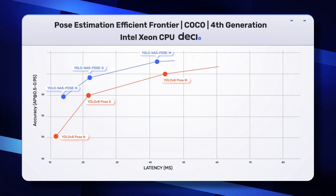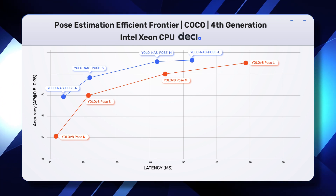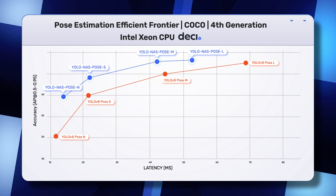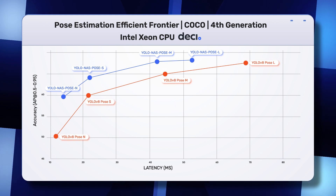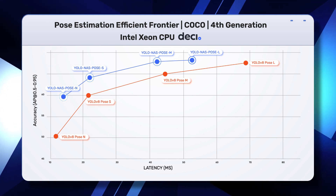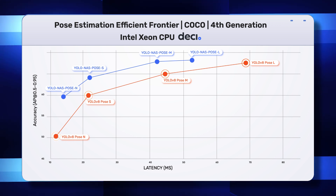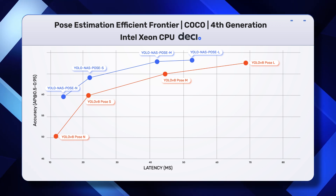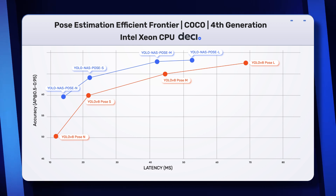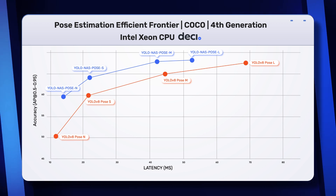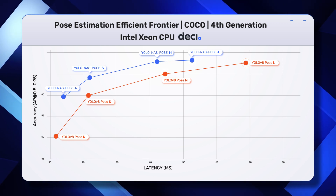Here is the Accuracy Latency Graph, also known as the Efficiency Frontier, which compares both YOLO NAS and YOLO V8 Pose Models. As you can see, the YOLO NAS models have higher accuracy than the YOLO V8 models. However, the smaller YOLO NAS models are not as fast as the YOLO V8 models, though the same is not the case for the larger YOLO NAS models.